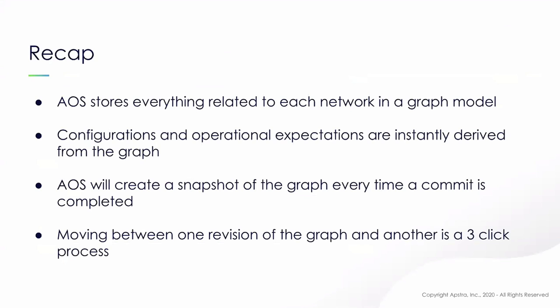In recap: everything that you do in an AOS system is stored in this graph model. We have processes that derive both the configuration as well as the expectations from that graph, and it's nearly instantaneous. Every time you push the commit button, AOS will create a snapshot of the entire network — that entire blueprint, not each individual device. We can move from one revision to another, and this is across multiple vendors. If you have a Cisco network with a couple of Juniper devices, the configurations, rendering, expectations, telemetry, and show commands are all handled automatically by AOS.